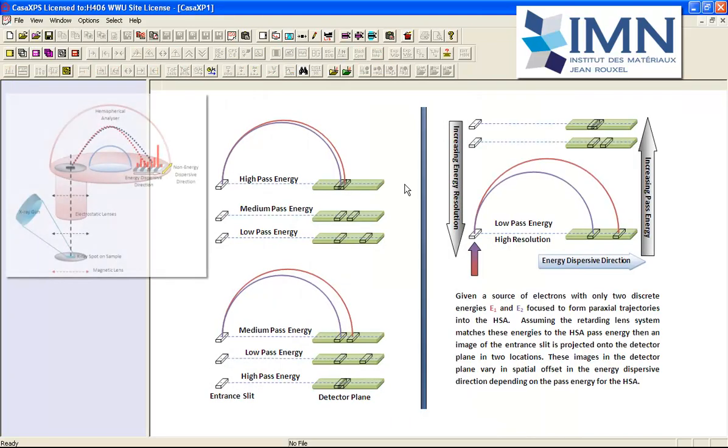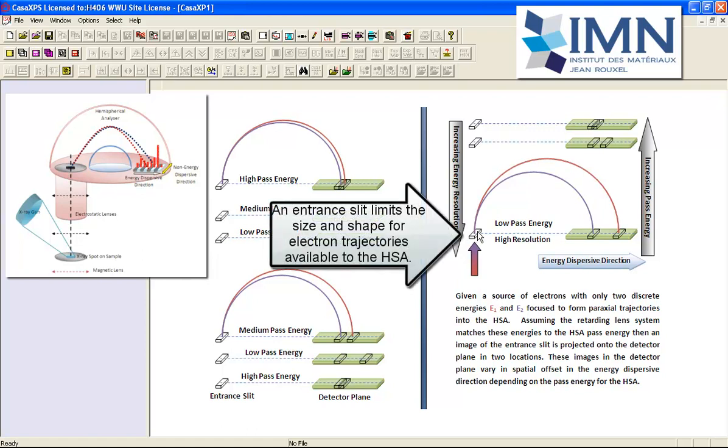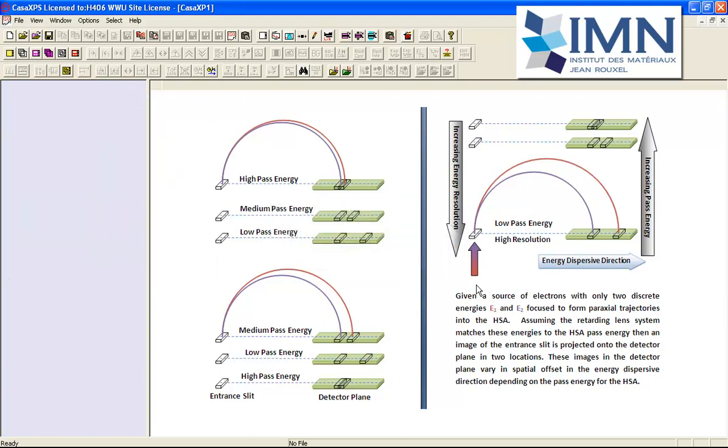We can understand this in the context of the hemispherical analyzer and the information that is entering the hemispherical analyzer through an entrance slit. If we had an ideal experiment where we had electrons entering in a paraxial way into this entrance slit and they only arrive with two different energies, E1 and E2, where E1 is greater than E2.